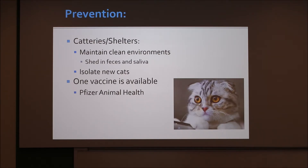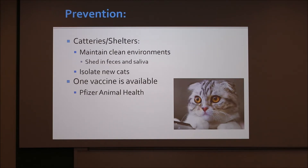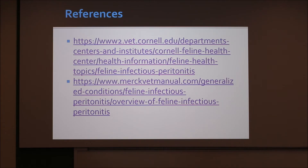The best way to go about this is prevention. In catteries and shelters, it's recommended to maintain clean environments. Since this virus is shed in feces and saliva, it's necessary to keep clean litter boxes and clean food bowls. When introducing new cats to your cattery, it's best to isolate them and monitor them for any symptoms of FIP. There is one vaccine available through Pfizer Animal Health, but this vaccine isn't as effective because if the cats have already been exposed to the coronavirus, it won't do anything.